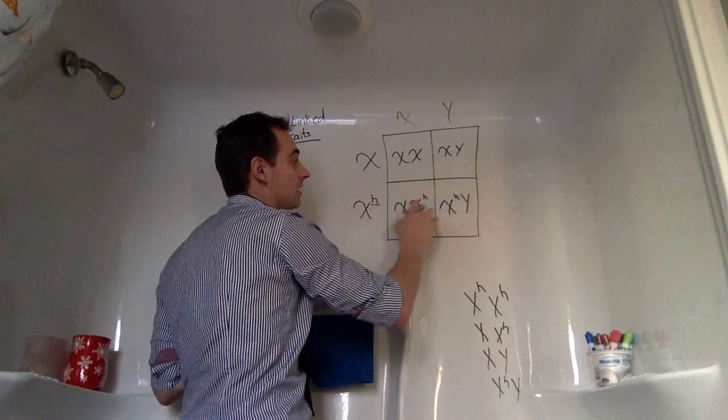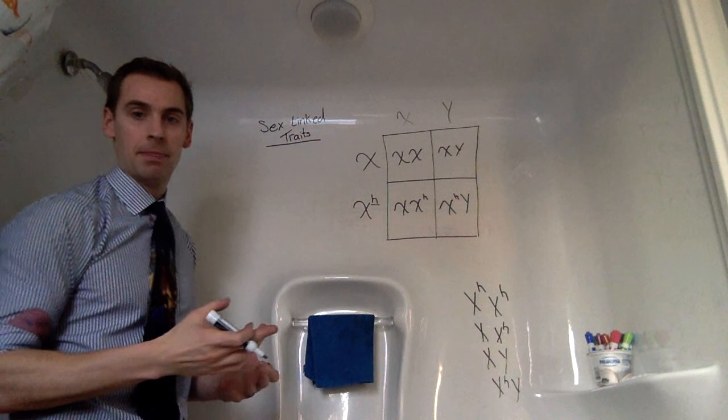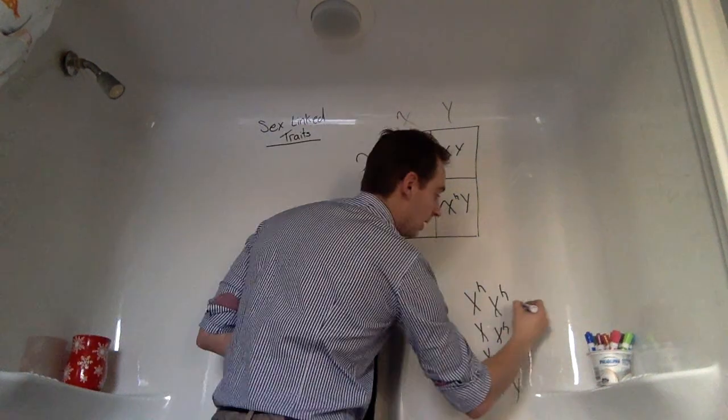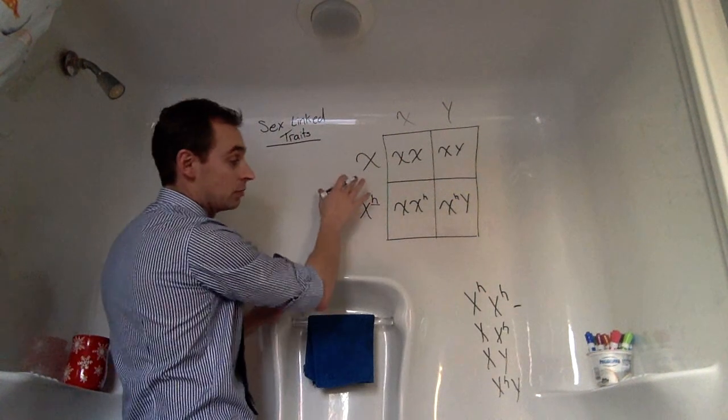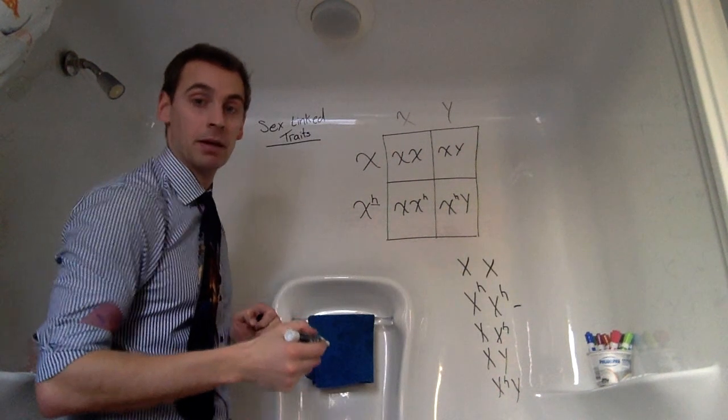We have a 25% chance that each of these combinations can appear. But what does that mean? So for example, if we end up with an individual, which in this case we didn't... Oh, I forgot one genotype. Sorry.